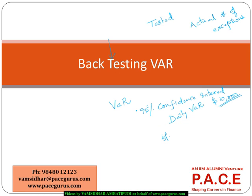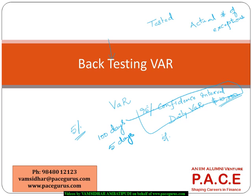Logically speaking, beyond 10,000 dollars per day, I should have only 5% exceptions. That means if I take 100 days of data, probably only on 5 days I should have losses beyond 10,000 dollars, but on the remaining 95 days my losses should be less than 10,000 dollars.